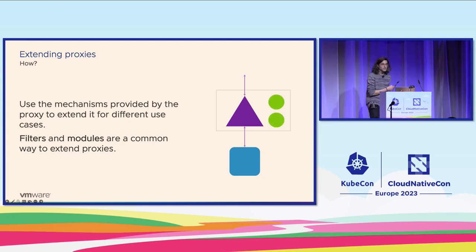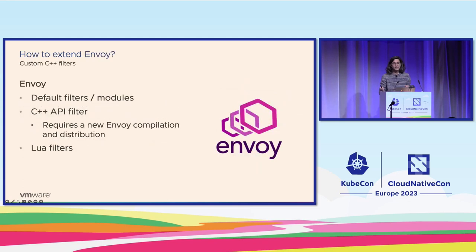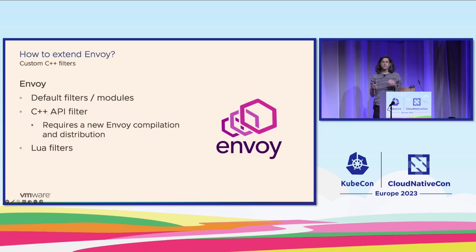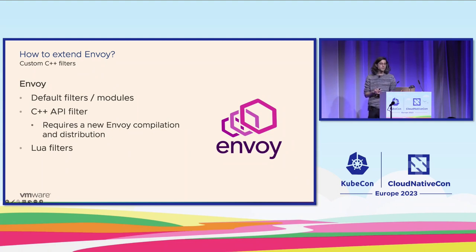These small modules are pretty common in every proxy, and usually you have different ways to create them. Focusing on filters and specifically about Envoy, the classic way to create those small filters is with the C++ API.